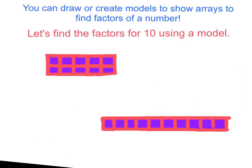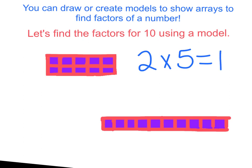You can draw or create models to show arrays to find factors of a number. Let's find the factors for 10 using the model. Looking at the first array, I have 2 rows, so I know one factor is going to be 2. And I have 5 in each row, so I know my other factor is going to be 5. If I count them all together, I get 10. So the first two factors of 10 are 2 and 5.